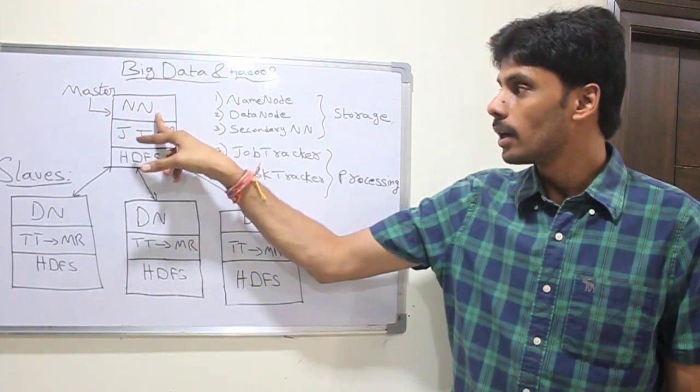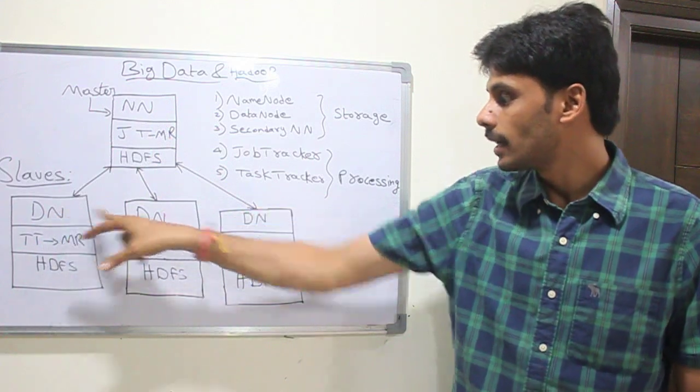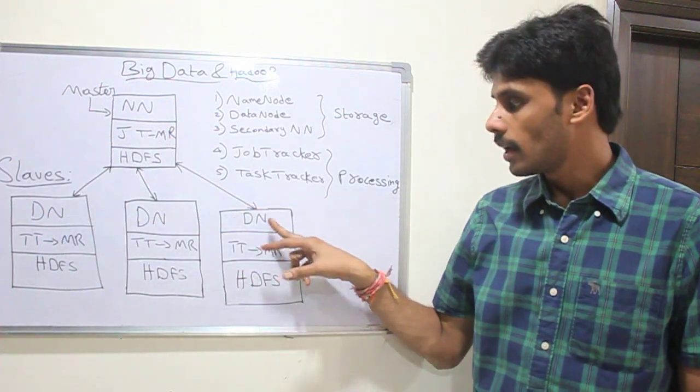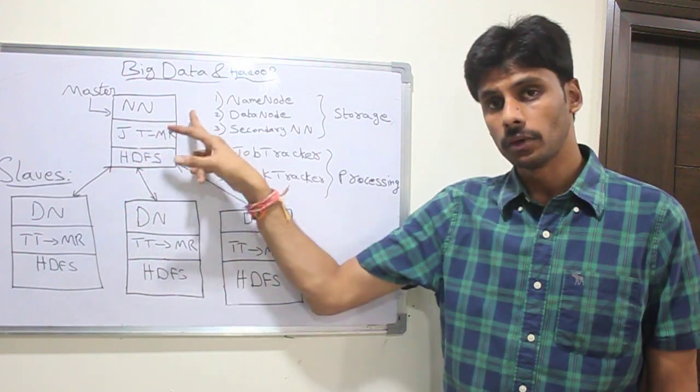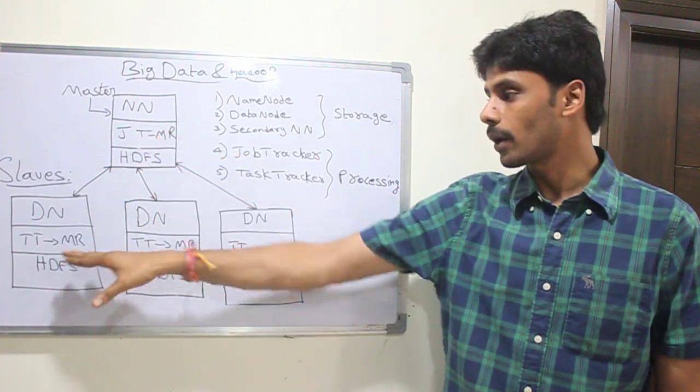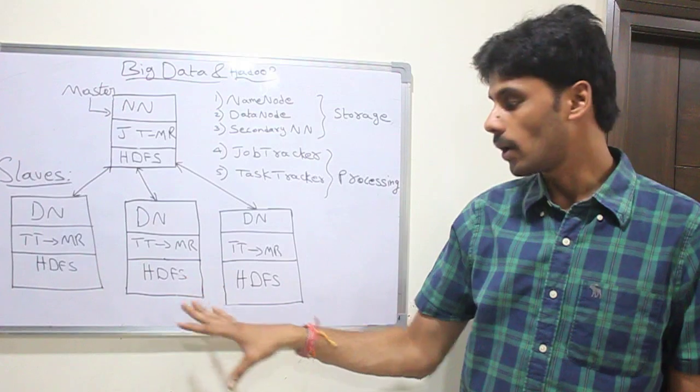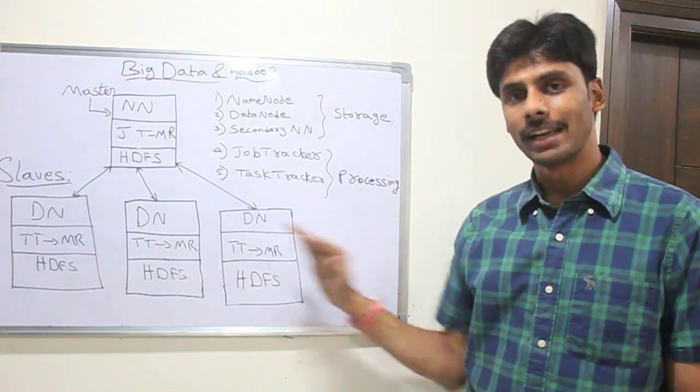So the NameNode spreads the data across the DataNodes, and the JobTracker is responsible for running the MapReduce jobs. It will send the job across the TaskTrackers which are located on the data nodes or the slave nodes.